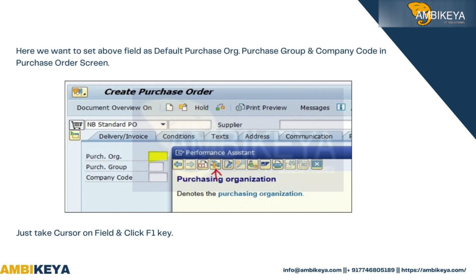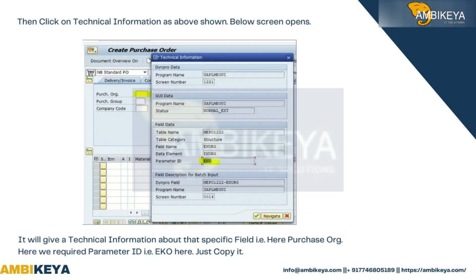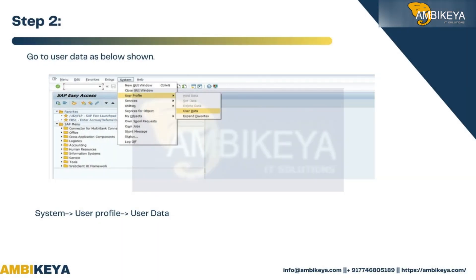Place the cursor on the field and press the F1 key, then click on Technical Information. The screen that opens gives technical information about that specific field. For Purchase Org, the required parameter ID is EKO. Copy that parameter ID.